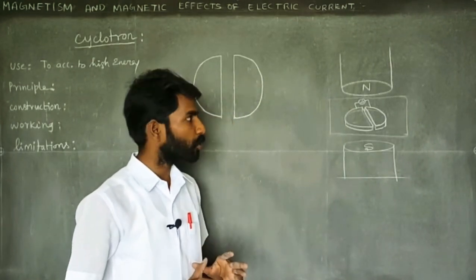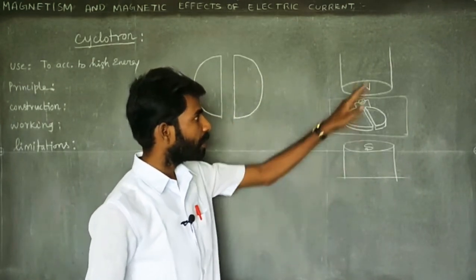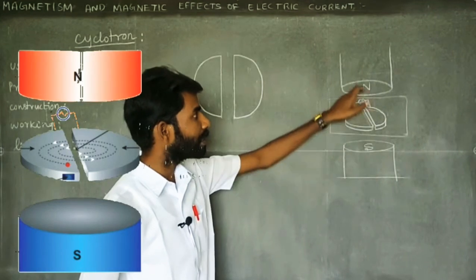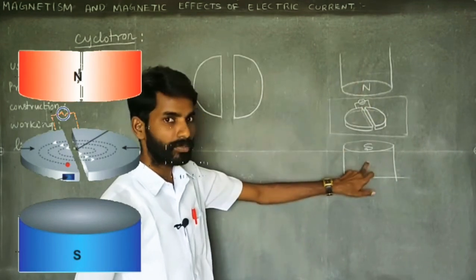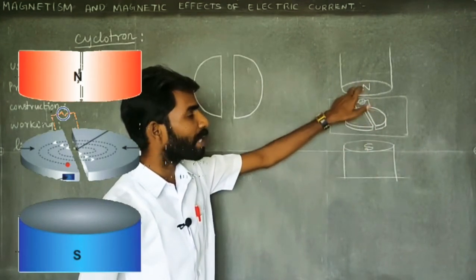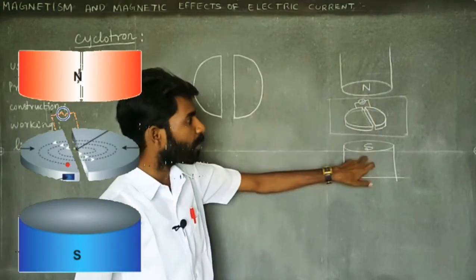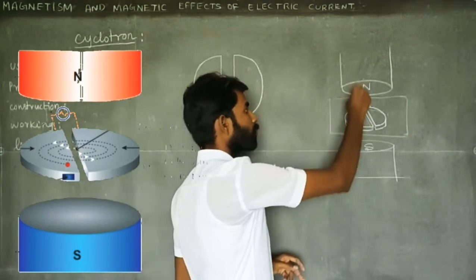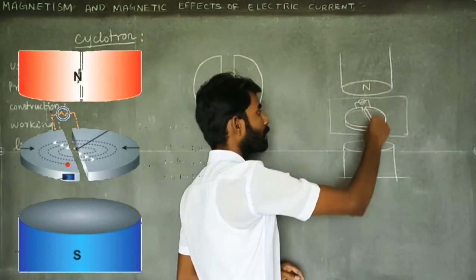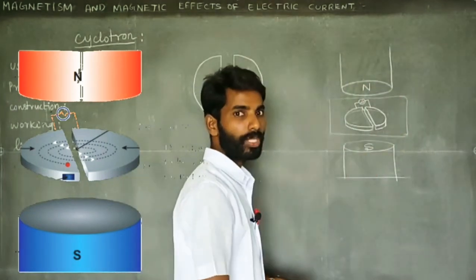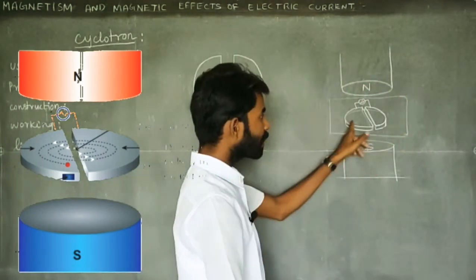If you look at the construction — there is a North Pole and South Pole, it is an electromagnet. The magnetic field is constructed from the uniform magnetic field between the North Pole and South Pole. The uniform magnetic field is going to act.